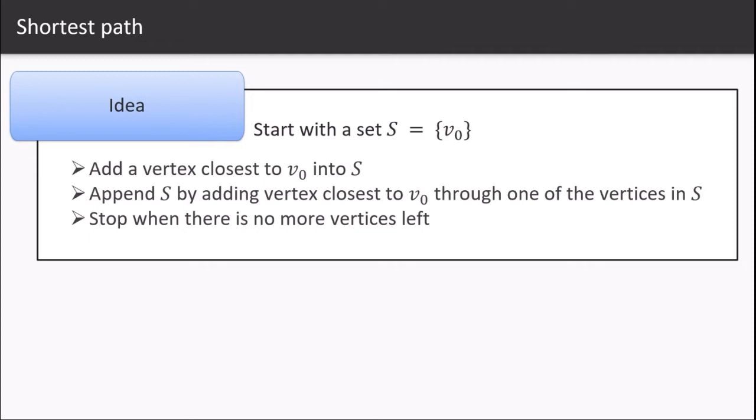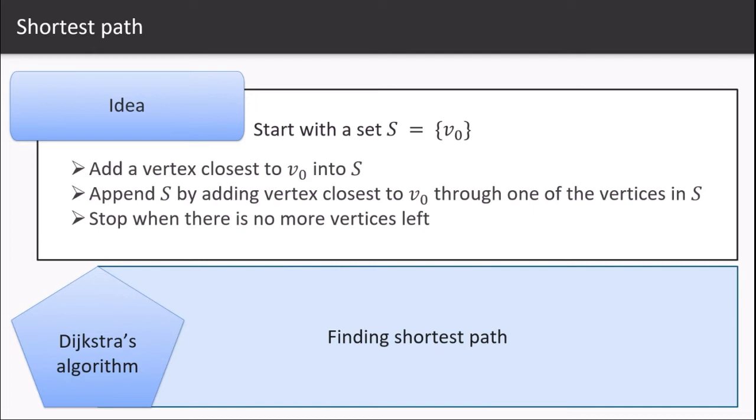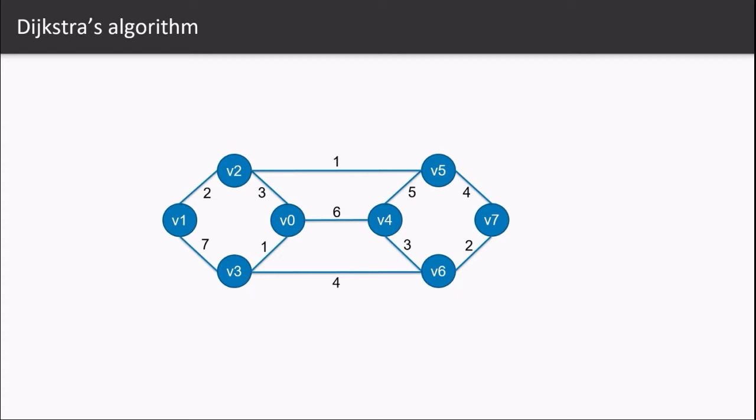Let us look at an example of implementing this shortest path algorithm called Dijkstra's algorithm. We have eight nodes or vertices, whatever you want to call them, with weights assigned on each edge representing distance from one node to another.